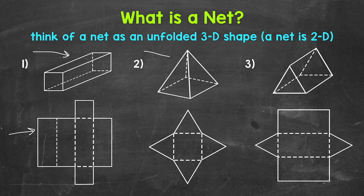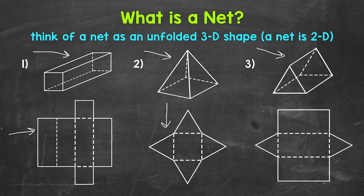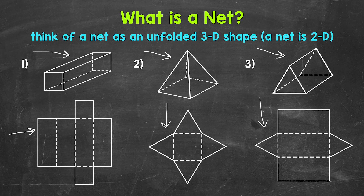Next, for number two, we have a square pyramid. Below we have the net of that square pyramid — imagine folding that net up along those dashed lines and it will fold into the square pyramid. And then lastly, for number three, we have a triangular prism, with the net of that triangular prism below. So folding along those dashed lines of the net will give us the triangular prism. That's a basic explanation of nets.